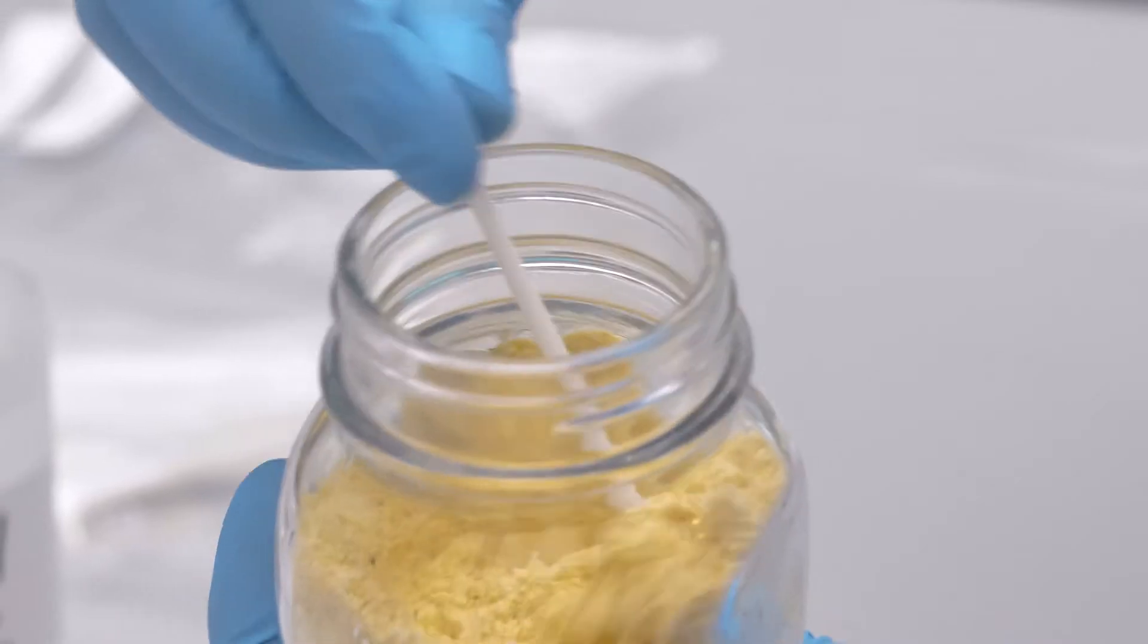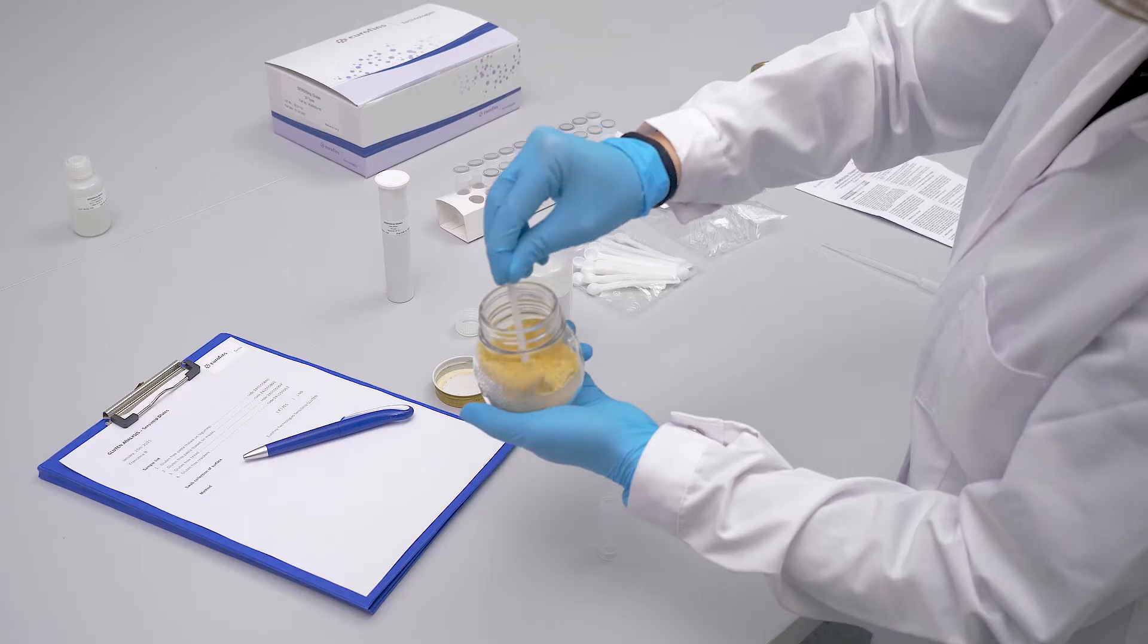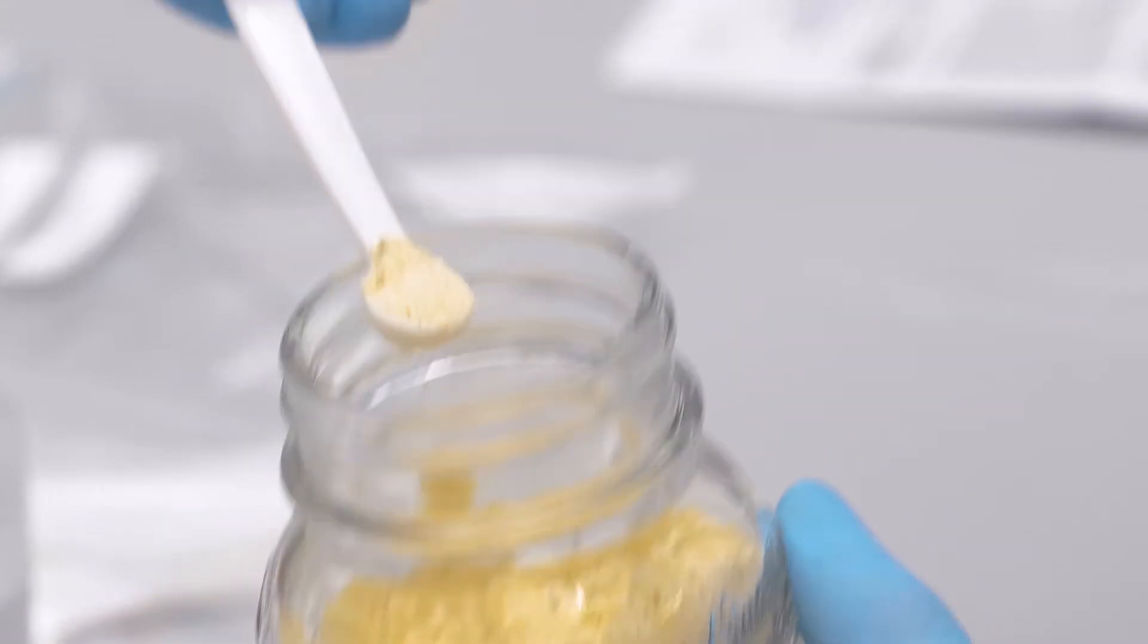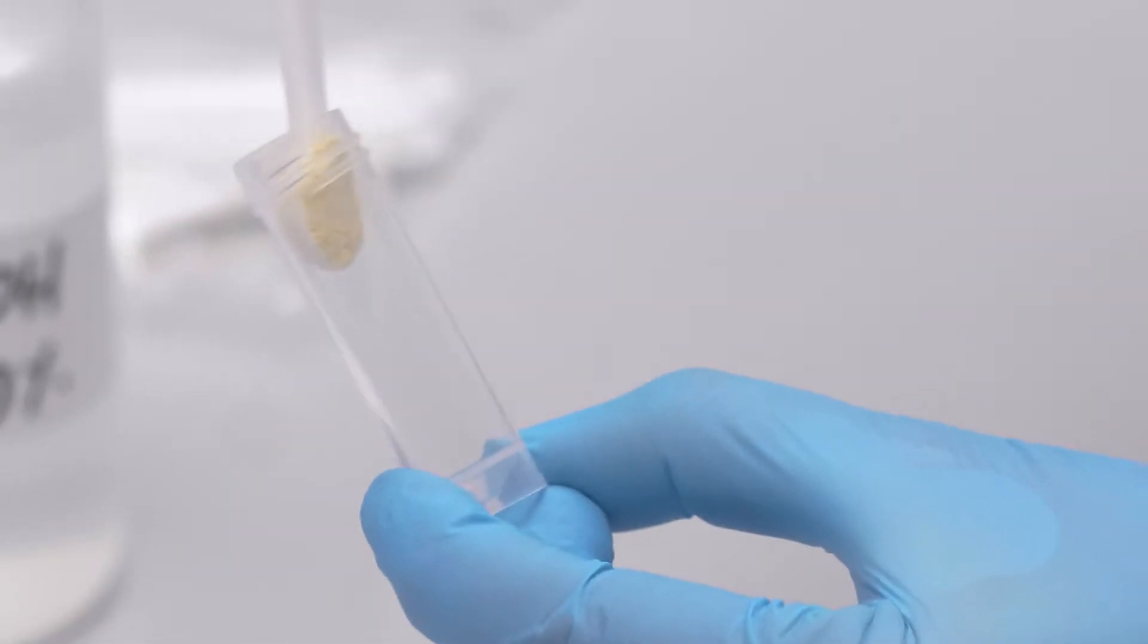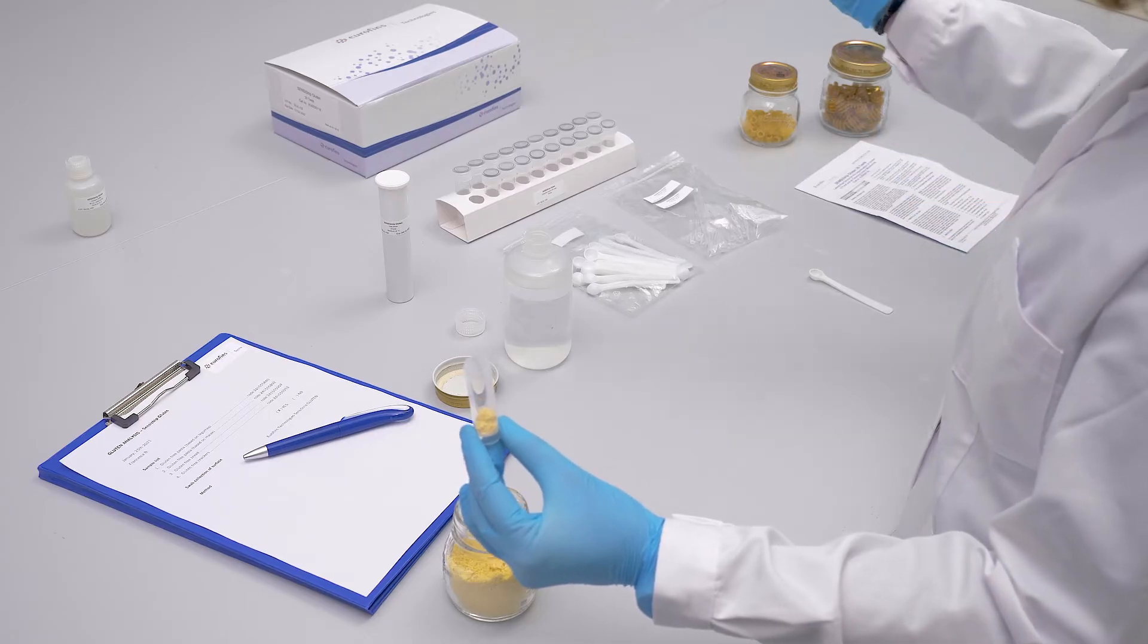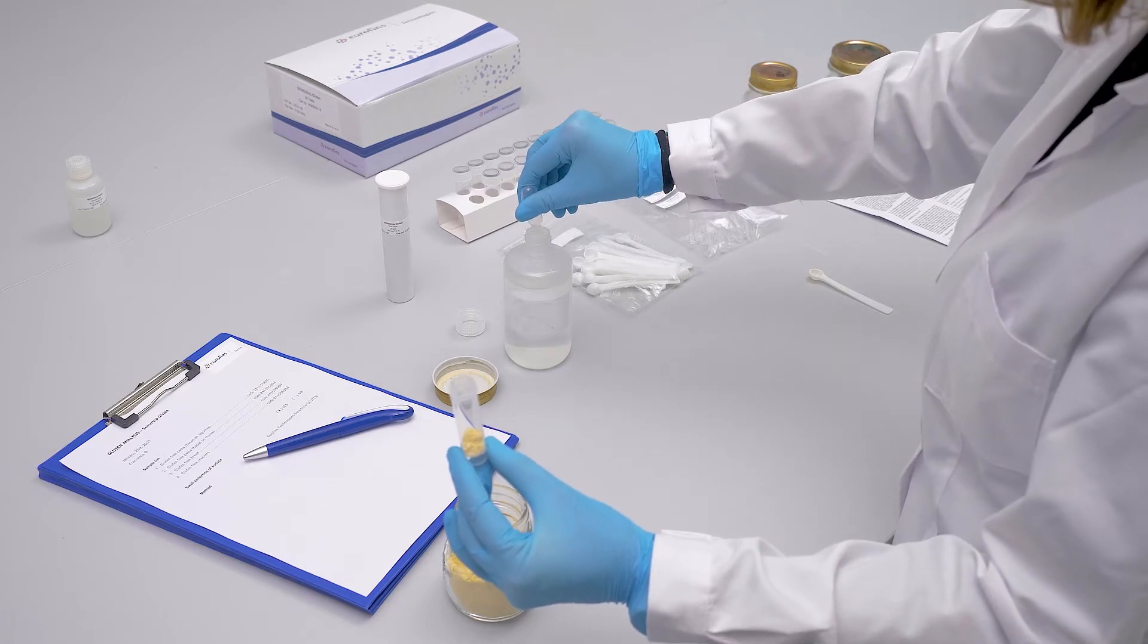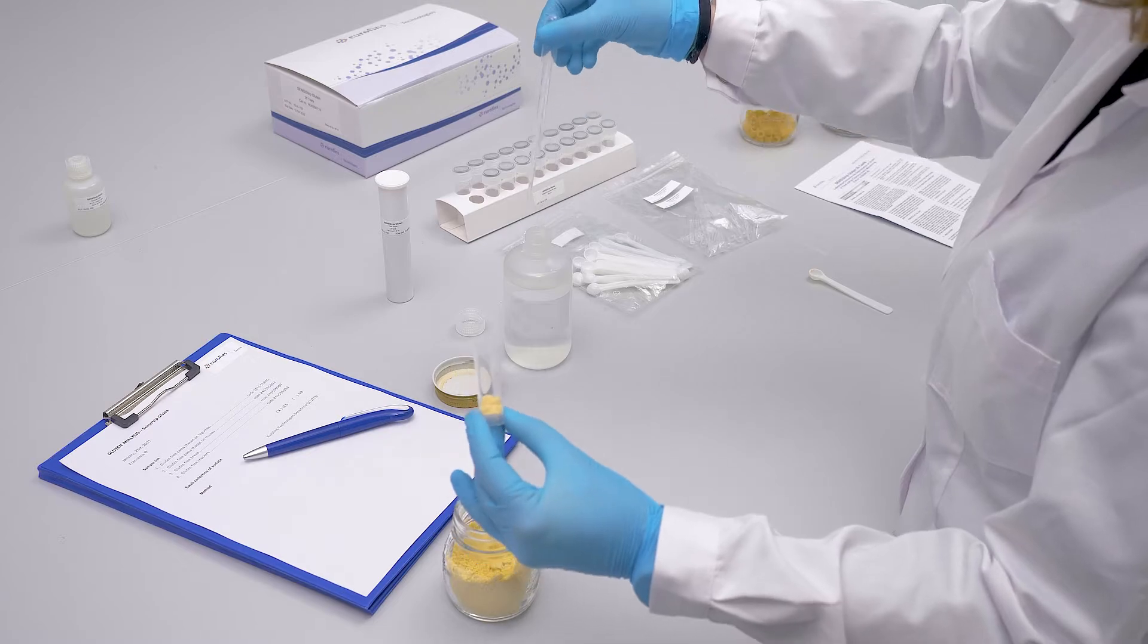For food samples analysis, it is needed to grind the sample properly and collect a quantity of about 300 milligrams and transfer it in the extraction tube. Dilute the sample adding 3 milliliters of ethanol water solution using one of the pipettes provided in the kit and shake for one minute.